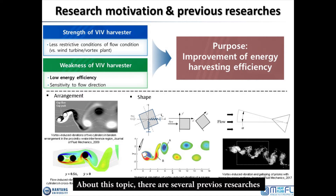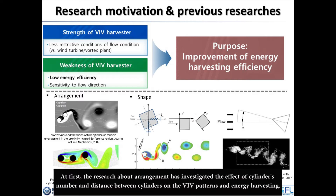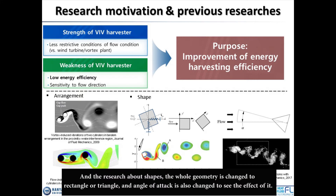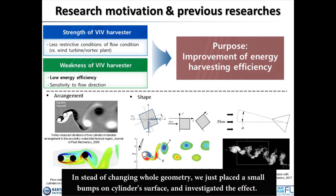Regarding this topic, there are several previous research efforts, which can be classified into two types: studies about arrangement and studies about shape. Research on arrangement has investigated the effect of cylinder number and distance between cylinders on the VIV pattern and energy harvesting. Research on shape has changed the whole geometry to rectangular or triangular forms, and the angle of attack is also varied. Our research is an extension of the shape research: instead of changing the whole geometry, we placed small bumps on the cylinder surface and investigated their effect.